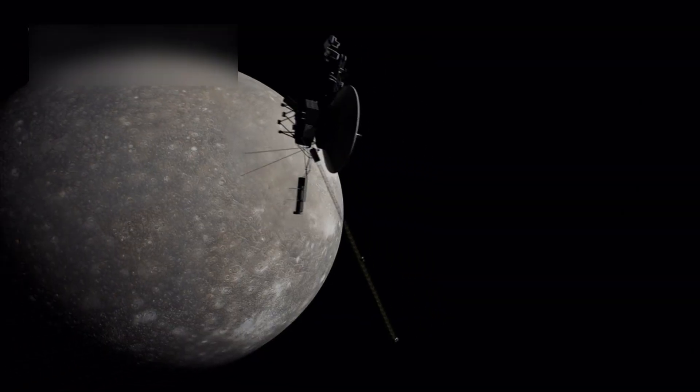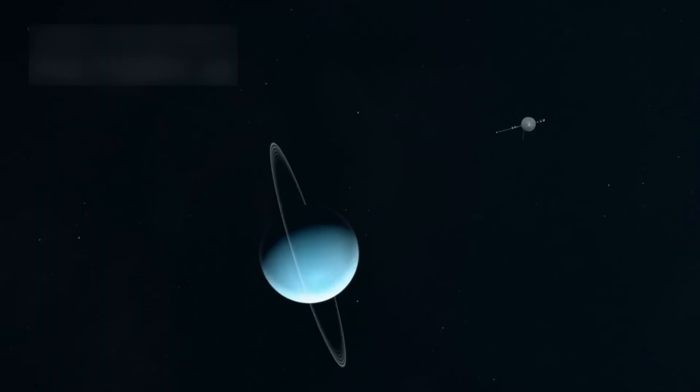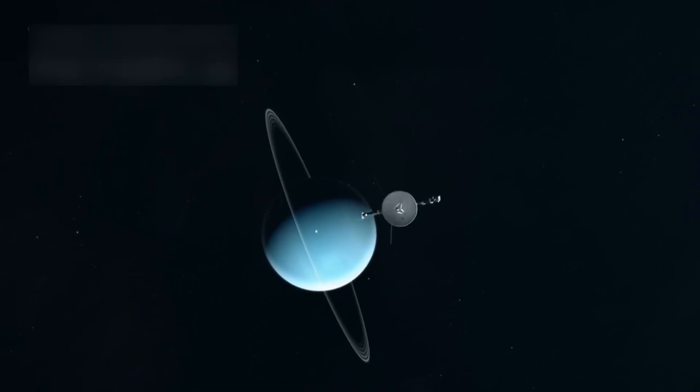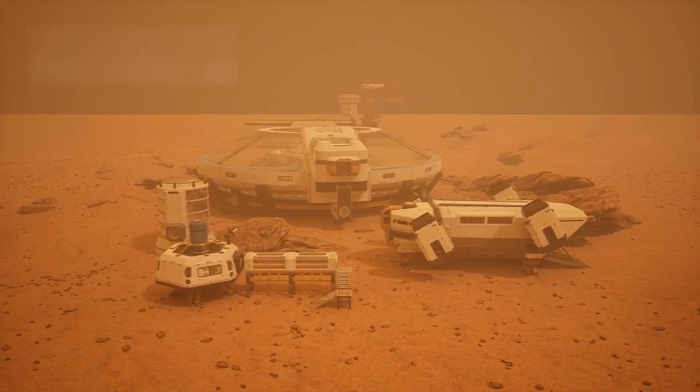Every transmission Voyager 1 sends is a message from the edge of the known universe. It travels in silence, powered by a fading generator and guided by an ancient computer, yet its impact is loud and clear. This is what human determination looks like when it's pointed at the stars.